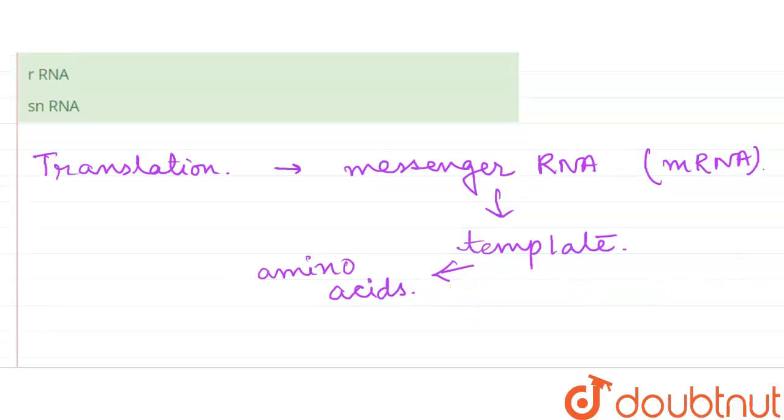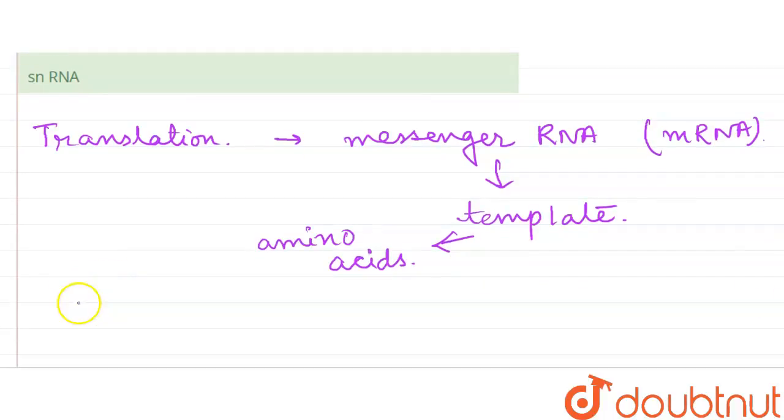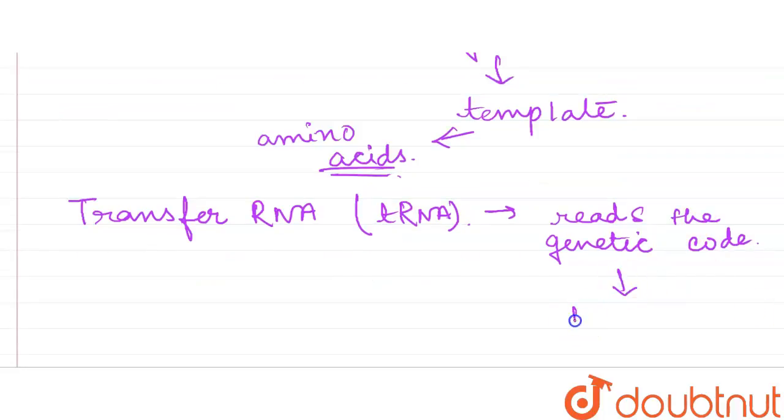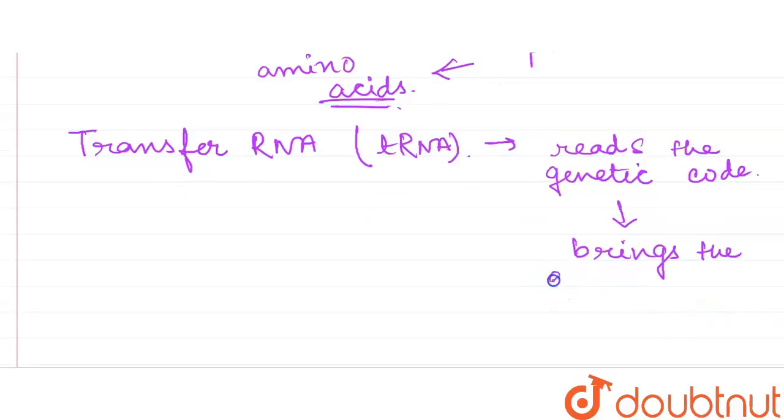Then comes the transfer RNA. Transfer RNA, that is the tRNA, reads the genetic code. It can read the genetic code and brings these amino acids specified by the codon, brings the amino acids.